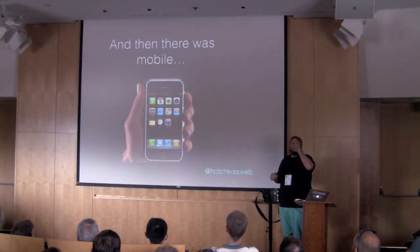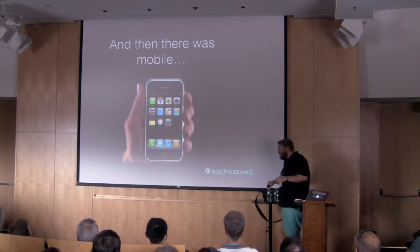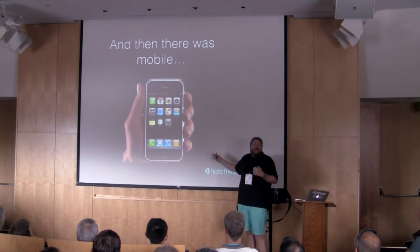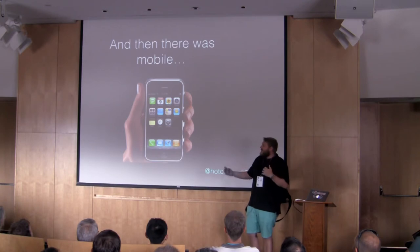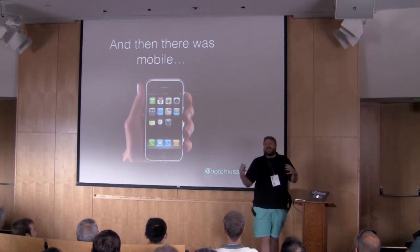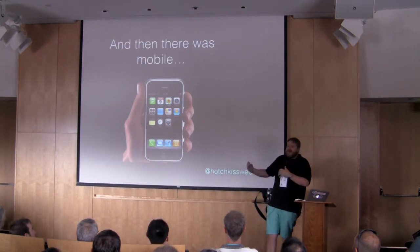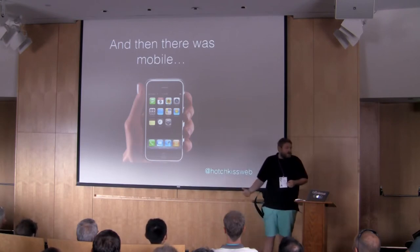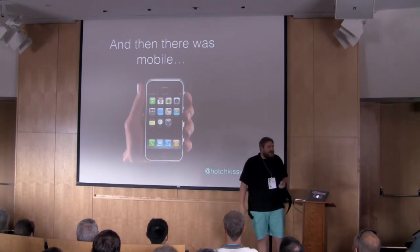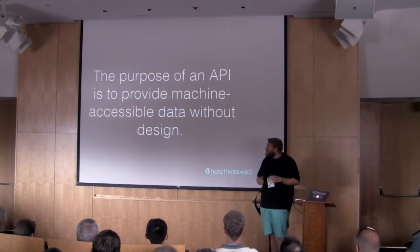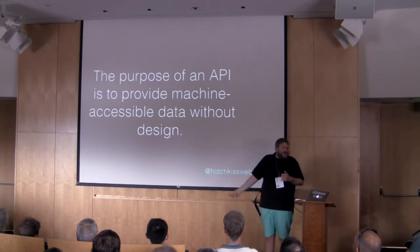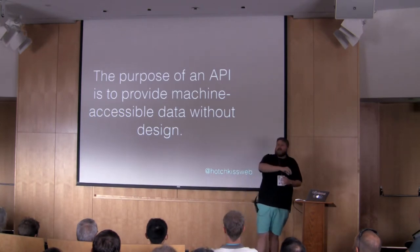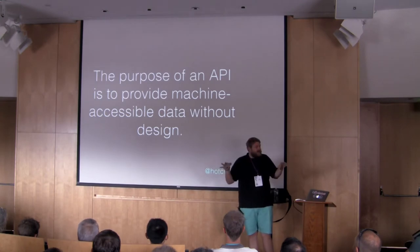And then there was mobile. You have all these jumps and starts at getting API-based technology, and then the iPhone comes out and changes the way we interact with devices. All of a sudden you have a reason to get your data on something other than a website - a reason to take your data and push it into a mobile app, into a different format. So what is an API? The purpose of an API is to provide machine-accessible data without design. How do we separate the data component from the design and keep those two things independent?